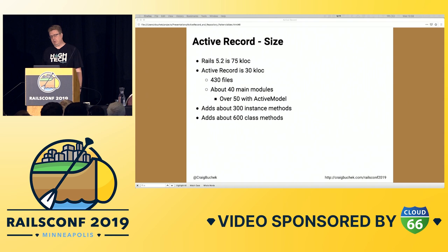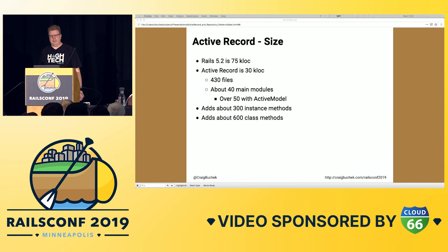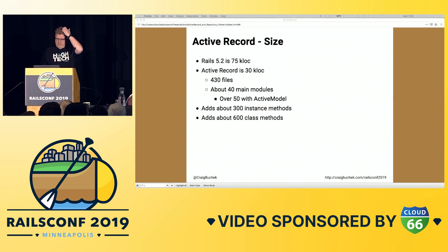I'm showing some stats here from a Rails 5.3 model with one field, and that came to over 100 instance methods and 600 class methods. For comparison, Object has 86 methods itself, but String and Array have about 250 methods. The number of class methods is really bad. You're not going to remember most of those — granted, some are dynamic and tied to fields, but there's a lot going on.